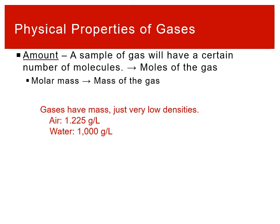So what we want to talk about are some of the physical properties, or the ways that we characterize a sample of gas. The first physical property of a gas is going to be amount. A sample of gas has a certain number of molecules. Generally, when we're talking about a gas, we care about the moles of gas we have, because that gives us information about how many objects are floating around in our sample. We can use molar mass to convert that into mass of a gas.